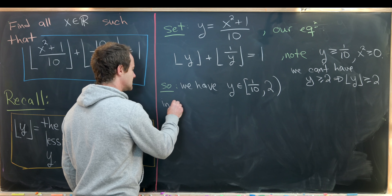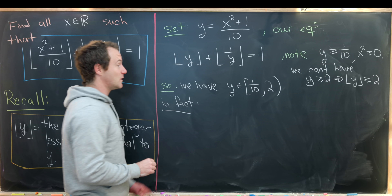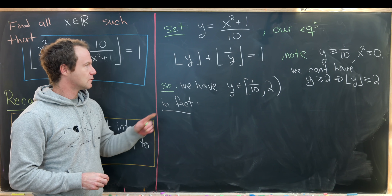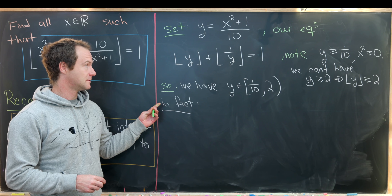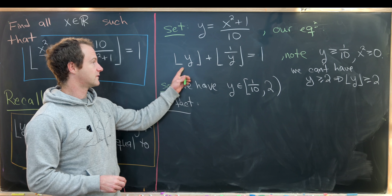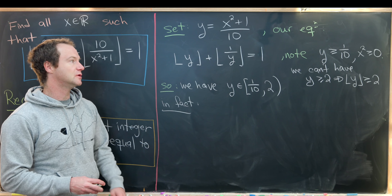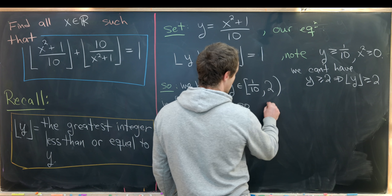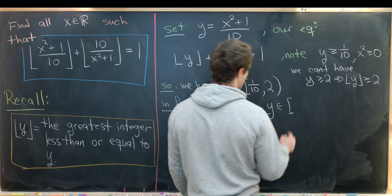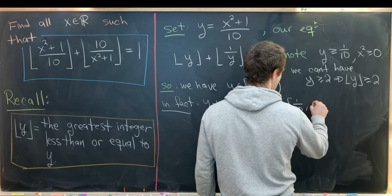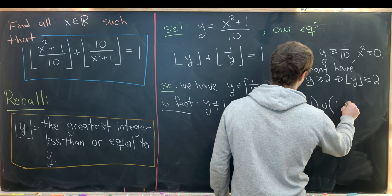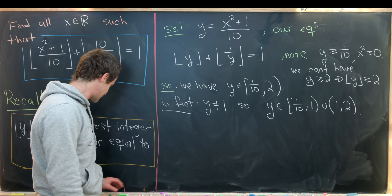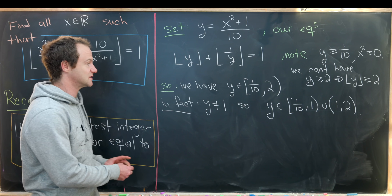We also cannot have y equal to 1. If y is 1, then 1 over y is also 1, and the floor of each summed gives 2, which is not equal to 1. So y cannot equal 1 either. This means y is on the union of the two intervals (1/10, 1) and (1, 2), and we'll treat these as two separate cases.